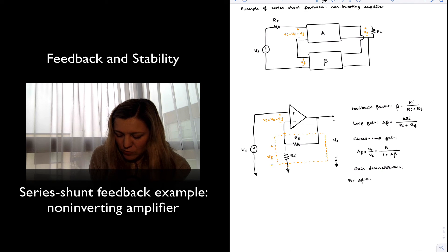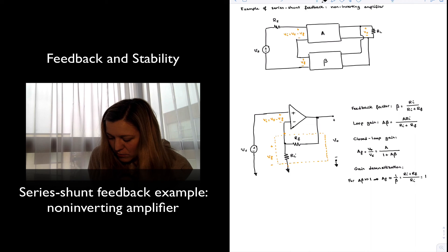For values of the loop gain much greater than 1, then I can approximate my expression for AF, my closed loop gain, as being approximately 1 over beta, which is RI plus RF divided by RI, just from the beta expression up there, which is 1 plus RF over RI, which matches the closed loop gain that we know for a non-inverting amplifier. We can see that the term of the open loop gain has disappeared.